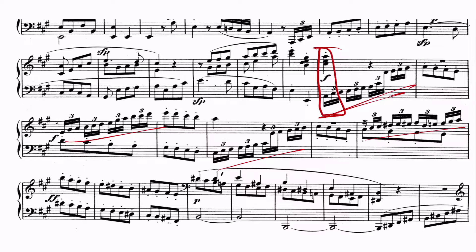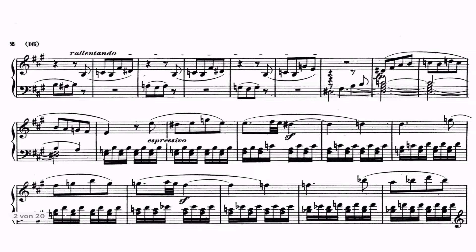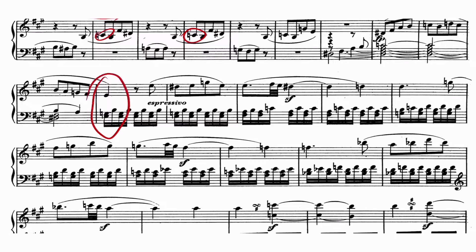The segment opens in A major but modulates to the dominant E major, which is the expected key of the second theme. During the rallentando, doubt arises and the lowered sixth — the C here — already prepares the unexpected second theme key of E minor. Entering E minor here. So we come with the C.